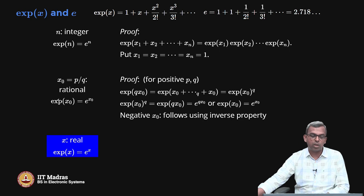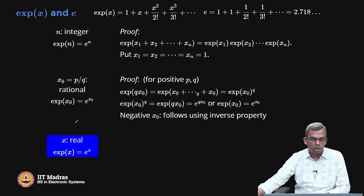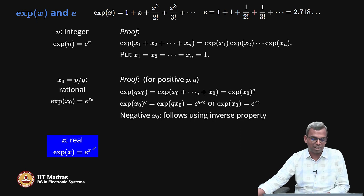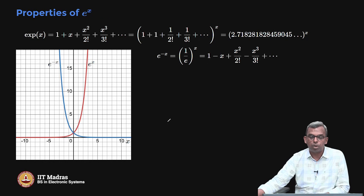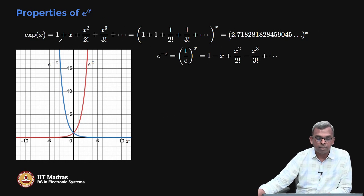The last statement is for real numbers. Once you have rational numbers, you can extend it to real numbers. For any real x, exp of x equals e power x. This is the final, total, intimate connection between the power series based definition of exp of x and the actual exponential definition of e power x. E power x is exp of x, and e is just this 2.718... which comes from the series. The proof here is a little bit technical; the real numbers are limits of sequences of rationals and you can use that to prove it for all reals.